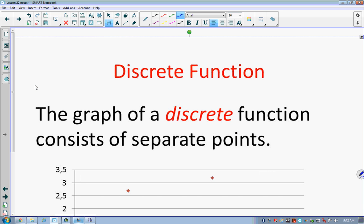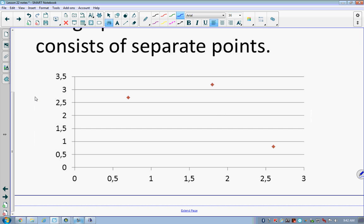So a discrete function looks like this. And we could add more points to it. But it's just individual points that are not connected at all. That's a discontinuous, or sorry, discrete function.